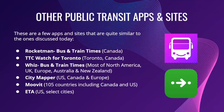Some alternatives to Google Maps and Transit include Rocketman Bus and Train Times, available in Canada; TTC Watch for Toronto, which is specific to Toronto, Canada; WIZ Bus and Train Times, available in most of North America, UK, Europe, Australia, and New Zealand; CityMapper, available in North America and Europe; MoveIt, available in 105 countries including Canada and the United States; and ETA, which is only available in select cities in the US. Now we'll get to the live demo.